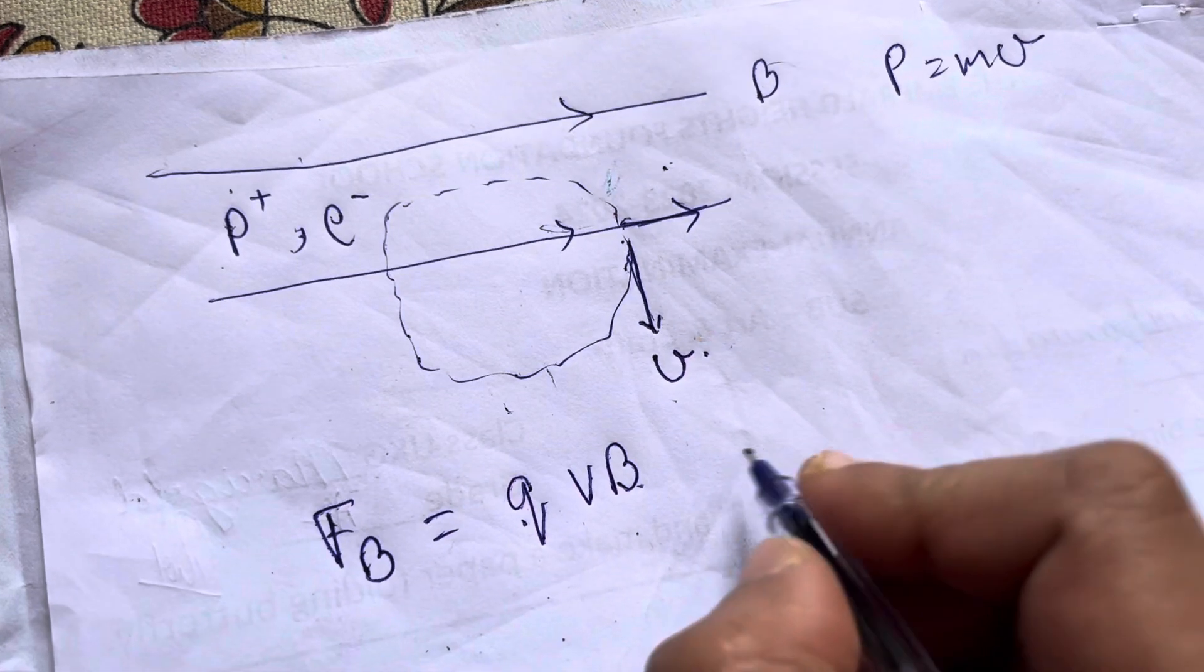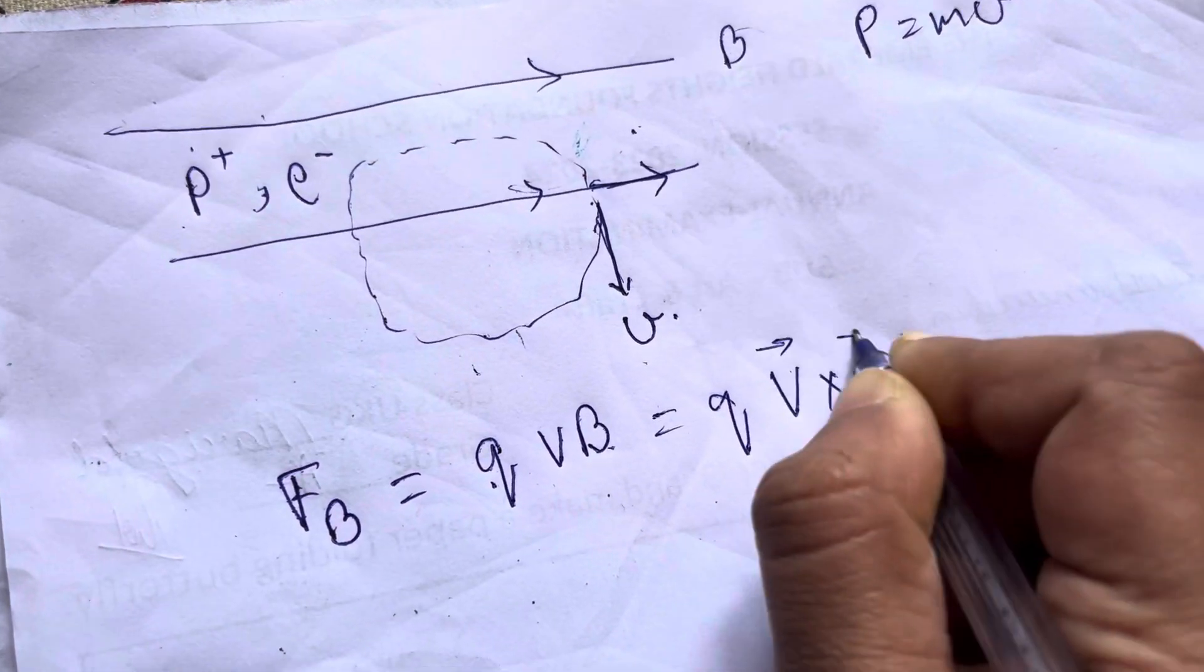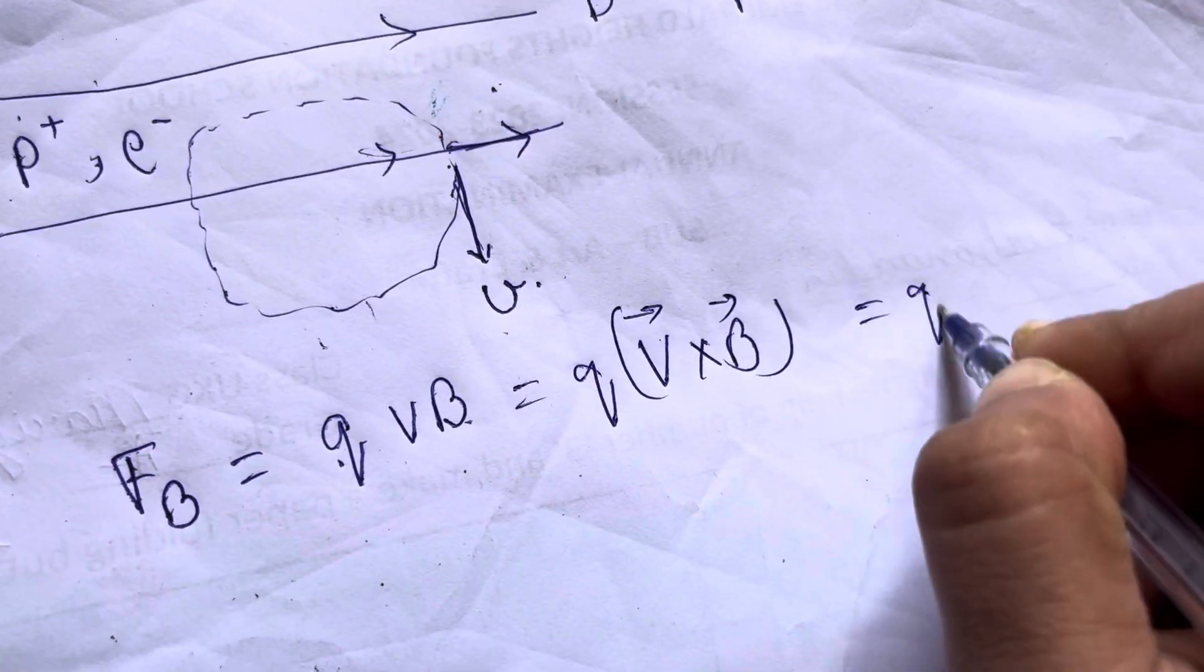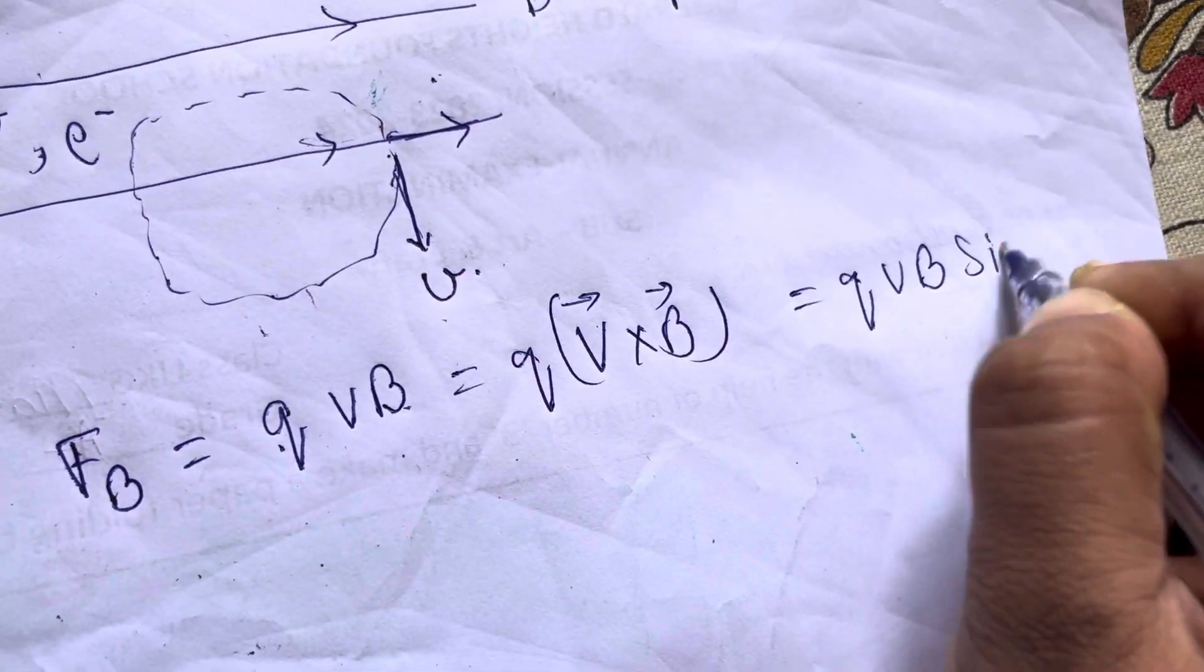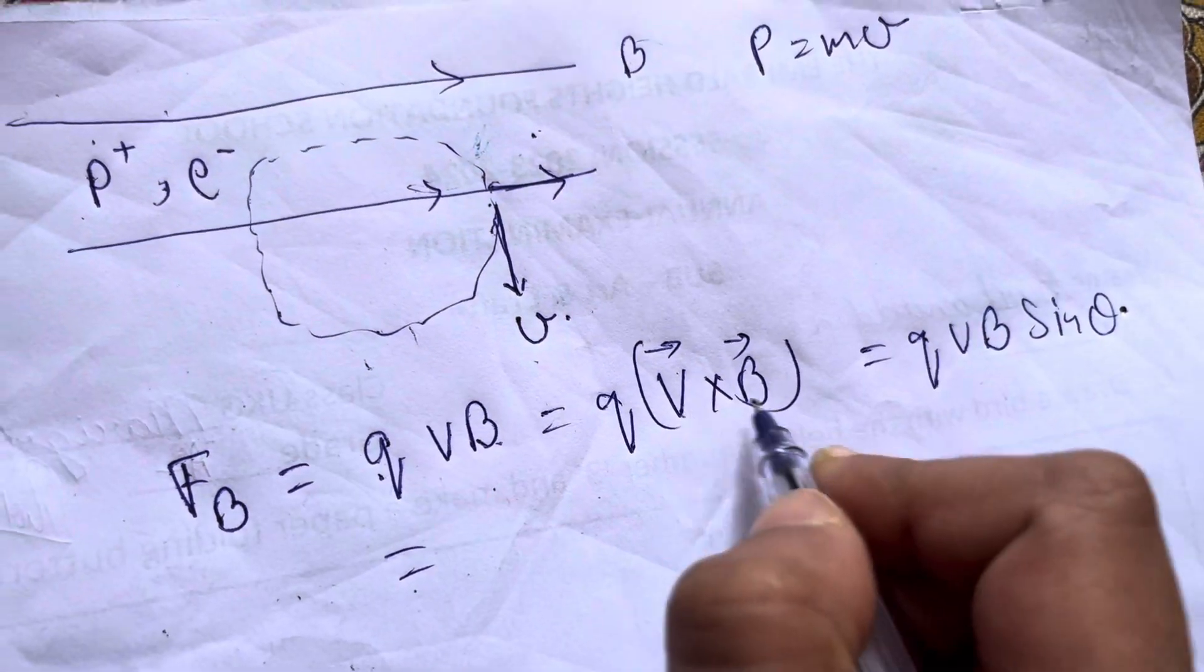On this charge, sorry, the actual formula is Q V cross B. And this is Q V B sin theta. Now what is theta? The angle between V and B.